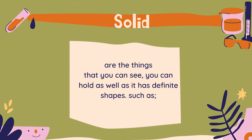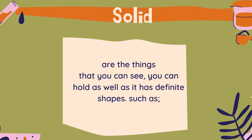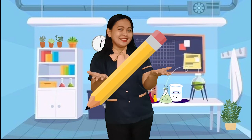What are the characteristics of solid? Solid are the things that you can see, you can hold, and they have definite shapes. Examples are rocks, chairs, chalk, table, and pencil.